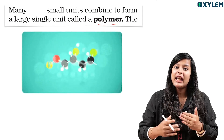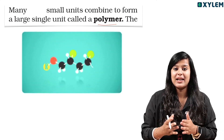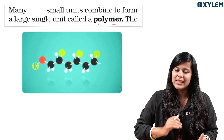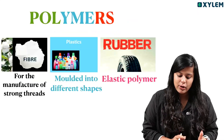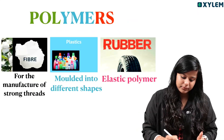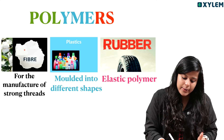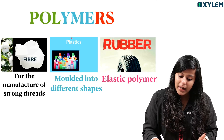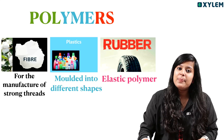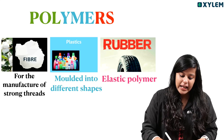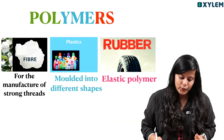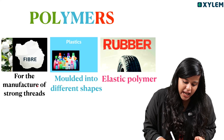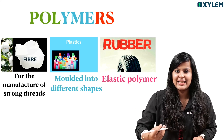We have different types of polymers. The types are fiber, plastic, and rubber. Fiber is used for the manufacture of strong threads.